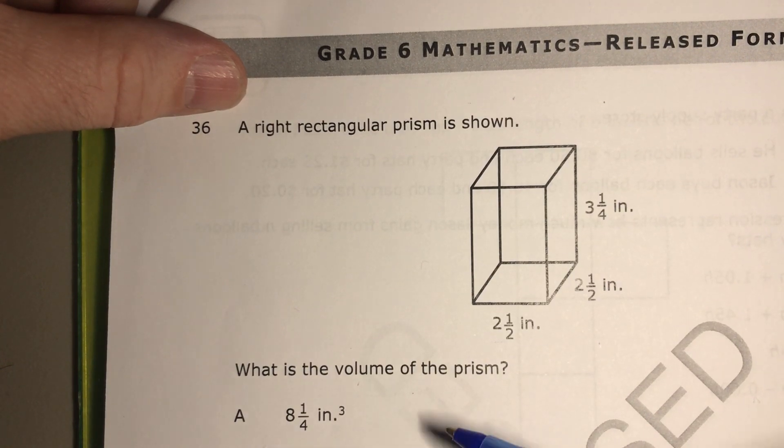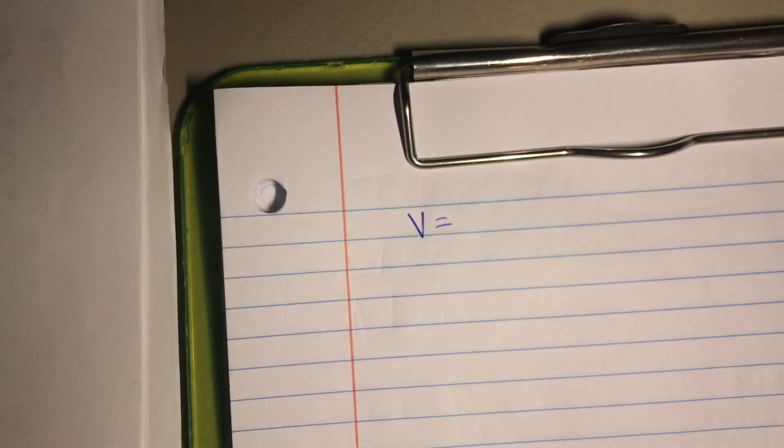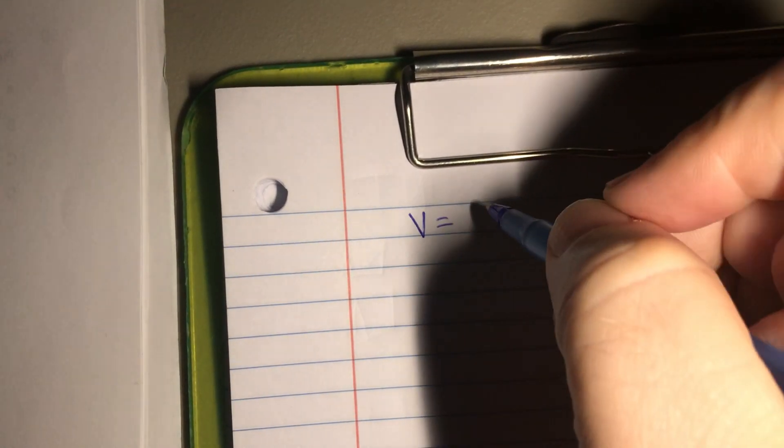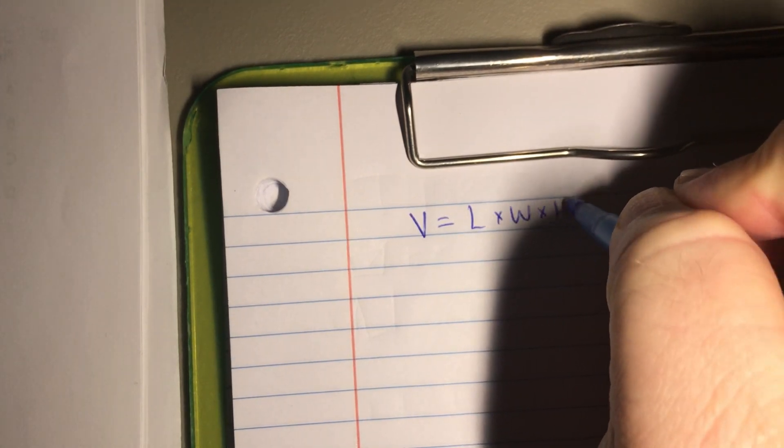What is the volume of the prism? So to find the volume of the prism, we need to first off write down the formula. So the formula for the volume of a prism is length times width times height.